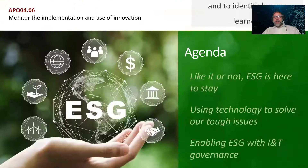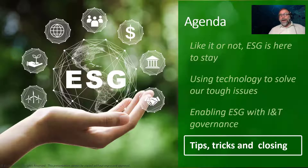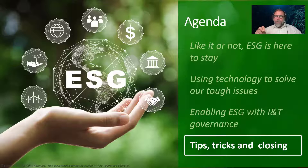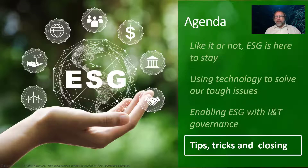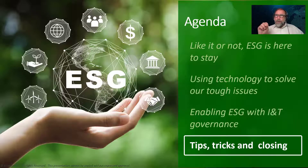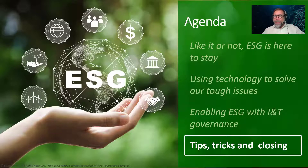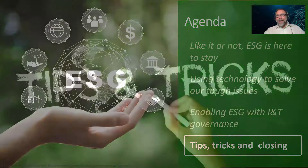That was a very quick look into just one of the several governance or management objectives in a framework called COBIT that can help you set up the stage for creating your ESG program. There's going to be a lot more information coming out on ESG — new frameworks, new legislation, new rules and regulations. You probably should start taking a look at your governance structures today to help prepare you for the compliance requirements that you might have coming up. Organizations are seeing great benefits to this. So let's finish up talking about my tips, my tricks, and my closing.